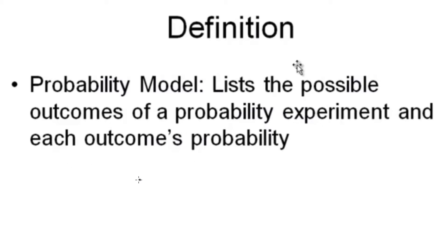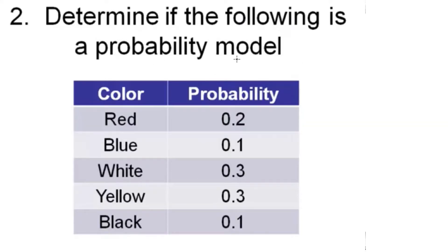A probability model lists all the possible outcomes of a probability experiment and each outcome's probability. To determine if the following is a probability model, we add all probabilities together and check if we get one. Adding 0.2 plus 0.1 plus 0.3 plus 0.3 plus 0.1 gives us one. Since we get one, this is a probability model — yes.